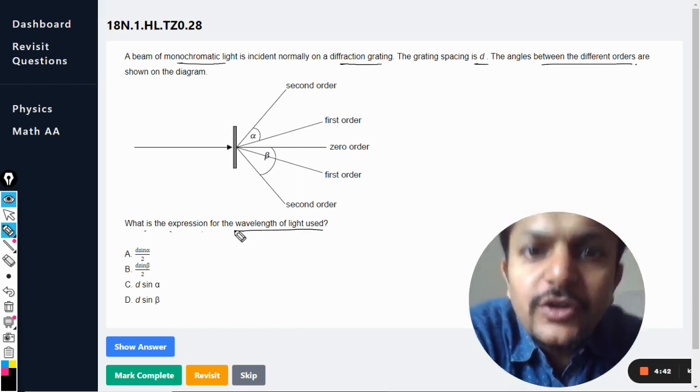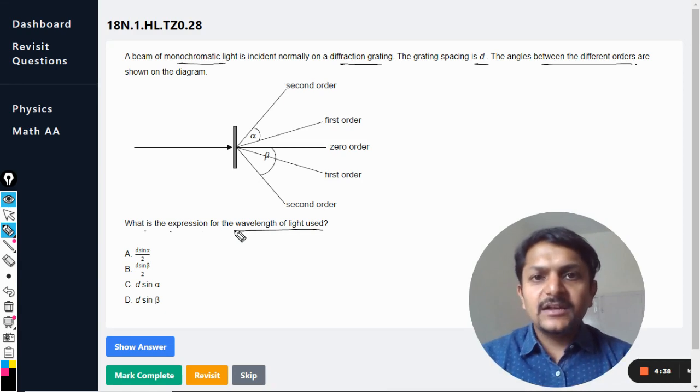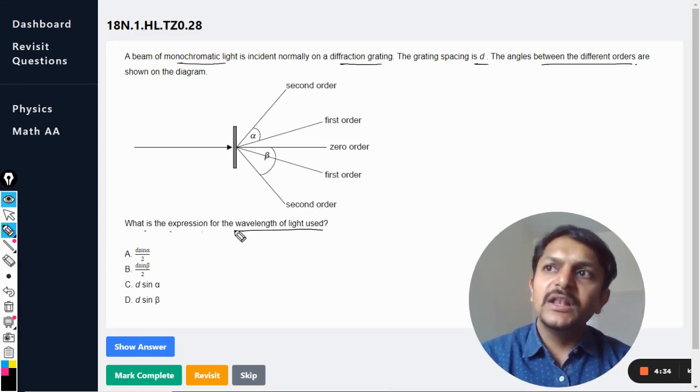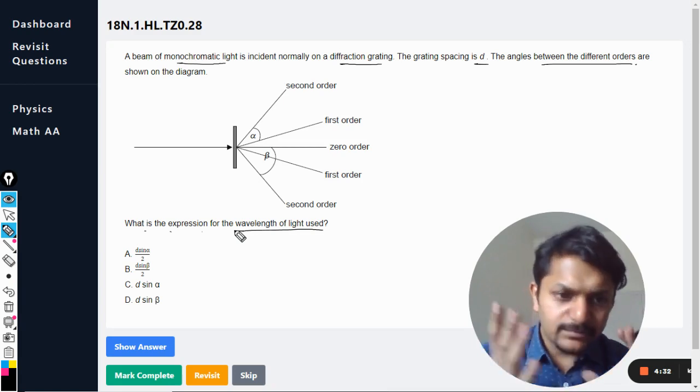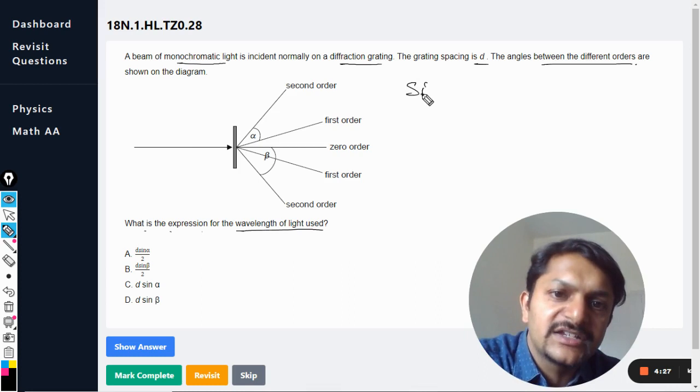My dear students, first of all be very clear about the question. In diffraction grating, diffraction grating is not different from multiple slit diffraction. Try to understand this thing. First of all, there is one diffraction which is called single slit diffraction.